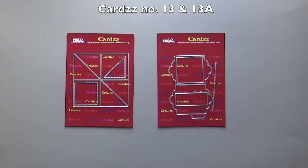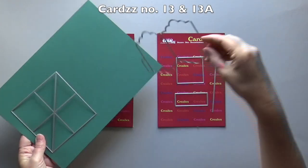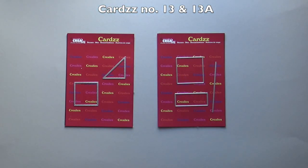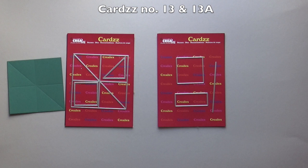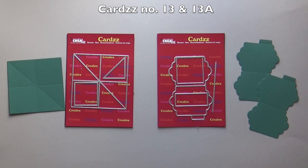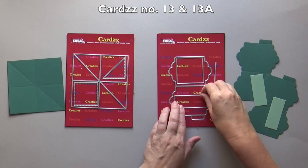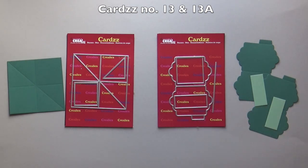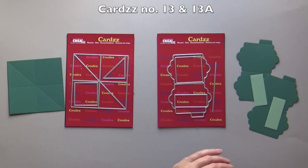Cards number 13 is the twist system and cards number 13a is the pop part. For the twist and pop card you need to die cut the big square of cards number 13 once, die cut the big die of cards number 13a twice, die cut the rectangle of cards number 13a twice, and die cut the square of cards number 13a four times.